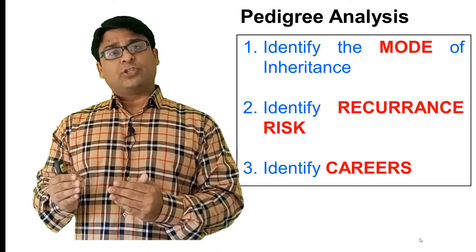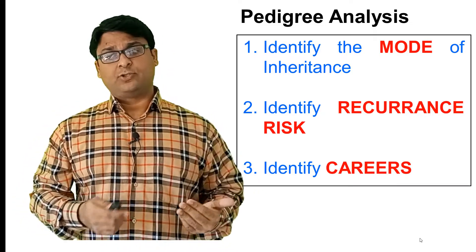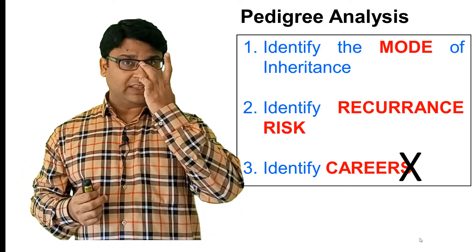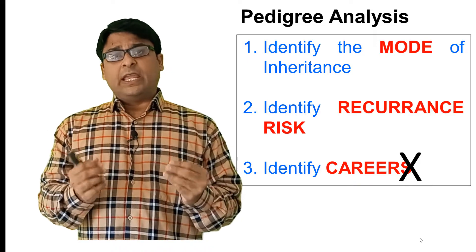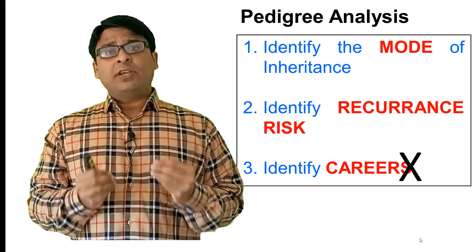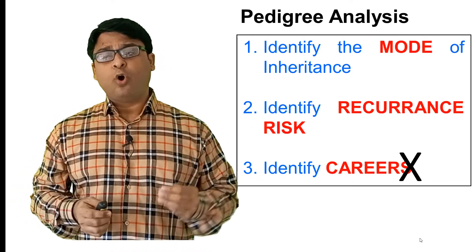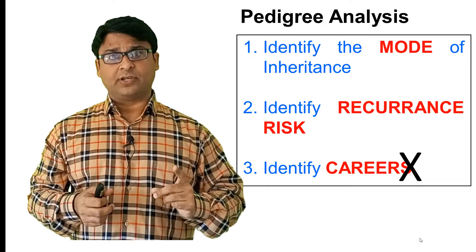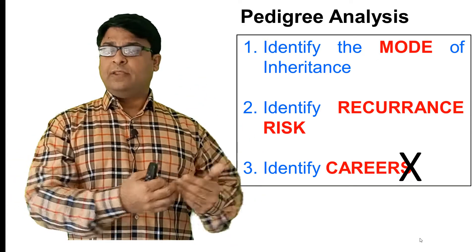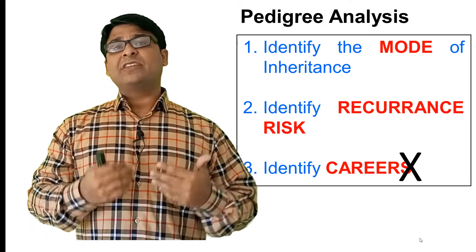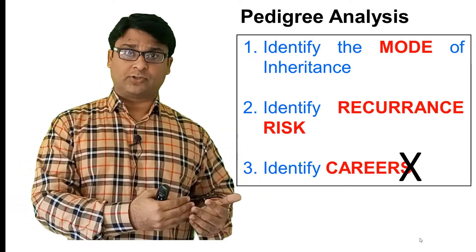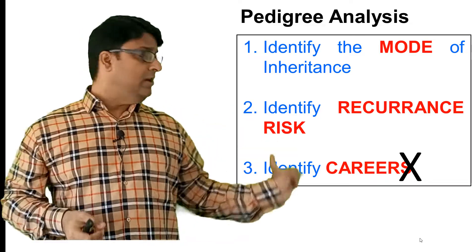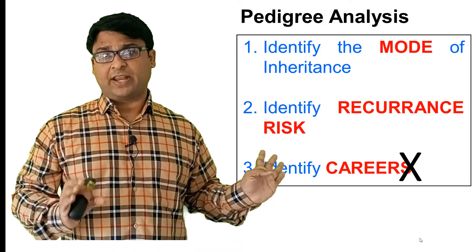Whenever we are talking about autosomal dominant disorders, there is no carrier state. Why? In autosomal dominant disorders, you need only one diseased allele to be present and the disease expresses itself. Therefore, there is no carrier state. Carrier state is usually the phenomenon of recessive disorders. So in dominant disorders, we don't see carrier status.